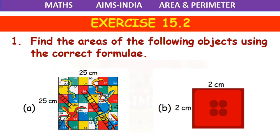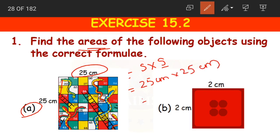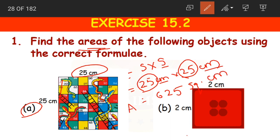Now coming to the exercise: find the area of the following objects using the correct formulae. First, it is a square with side S equal to 25 centimeters. The formula is S into S, so area equals 25 centimeters into 25 centimeters equals 625 square centimeters.